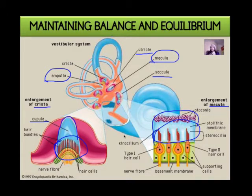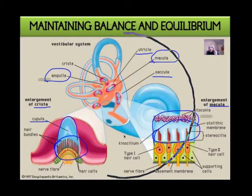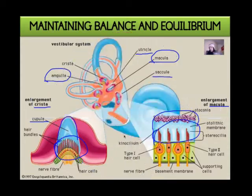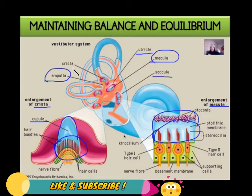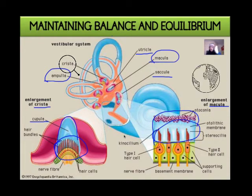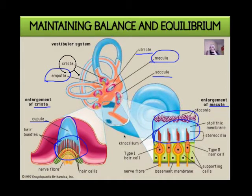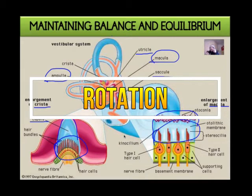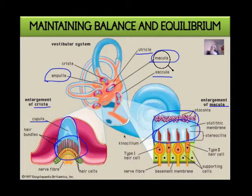The cristi — the receptor cells within the ampulla — are very important because they are the receptor organ for rotation. When our body is rotating and turning around, it is the cristi that detect the movement of the endolymph. So the cristi is the sensory organ for our body's rotation.